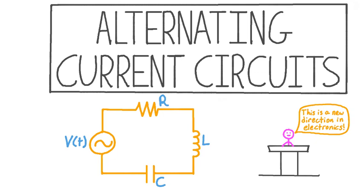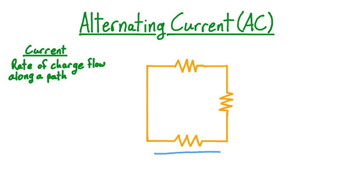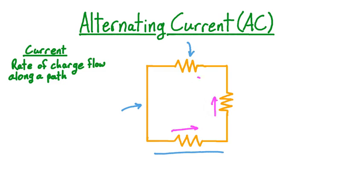Let's start by defining alternating current. Current is the rate at which charge flows along a path. In an electrical circuit such as these resistors connected in series, the path is formed by the wires and the components of the circuit. As we can see from this example, there are two possible directions for the current: the charge can either flow clockwise or counterclockwise through the circuit.